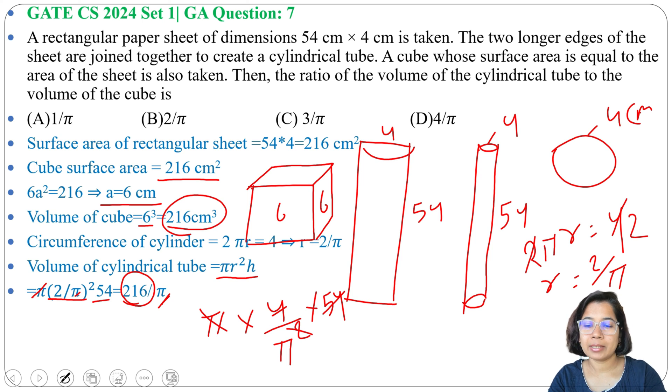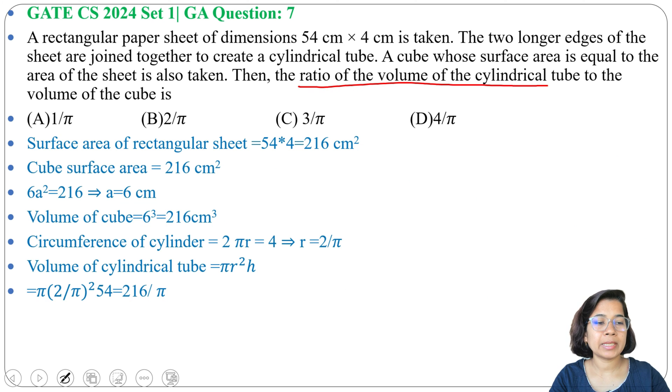We got 216 divided by π as the volume of the cylindrical tube. Now ratio of the volume of the cylindrical tube to the volume of the cube. So volume of the cylindrical tube is 216 divided by π.